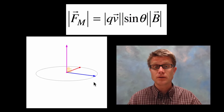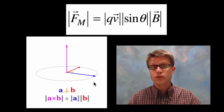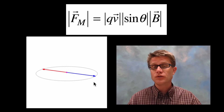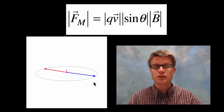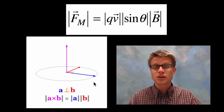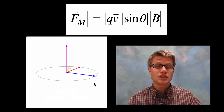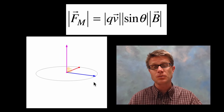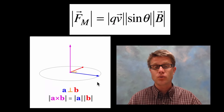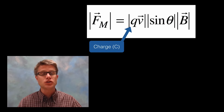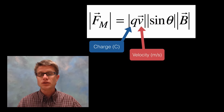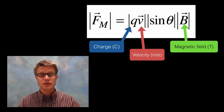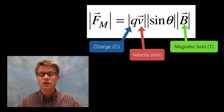If velocity and magnetic field are pointed in the same direction, we have no force. Watch what happens when they become perpendicular: we get a greater magnetic force. If it moves to 180 degrees, the magnetic force is 0; back to 90 degrees it's at its maximum. By using sine theta, we can figure out how much the cross product — multiplying velocity times the magnetic field — affects the overall magnetic force. The parts of the formula are: Q (charge, measured in Coulombs), V (velocity, in meters per second), B (magnetic field, measured in Teslas), and the magnetic force is measured in Newtons.